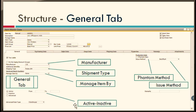We previously discussed how items can be made active or inactive when no longer in use. The Active field defines a range of dates to determine the validity period of an item. When you mark an item as inactive, it defines the range of dates during which the item is frozen and unavailable.